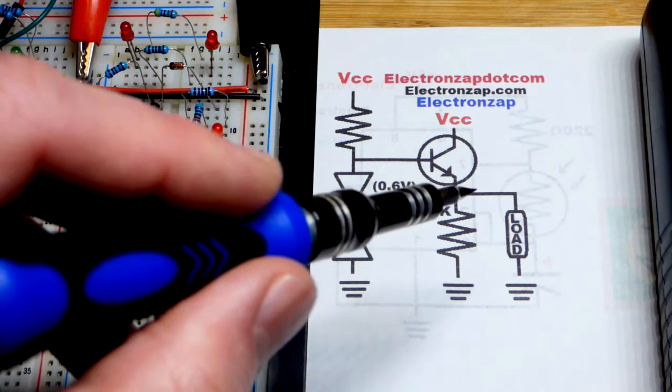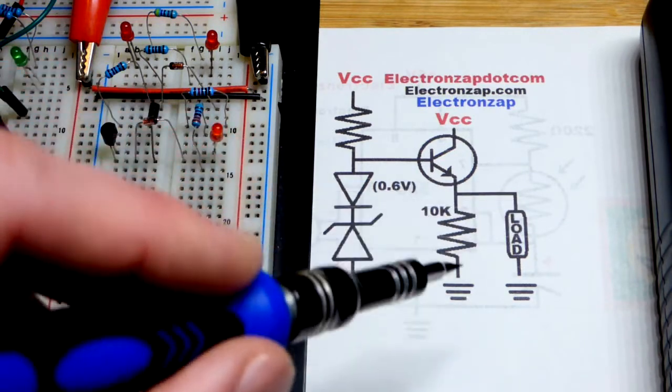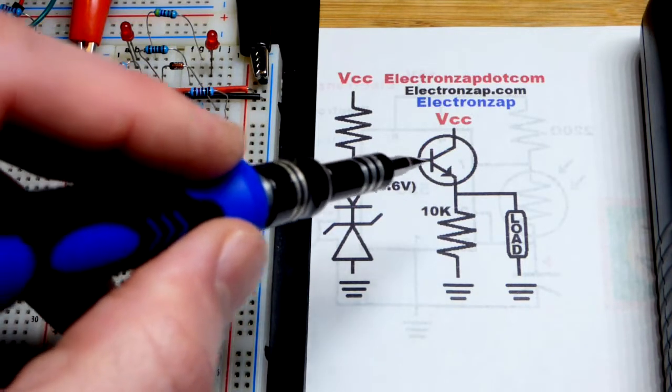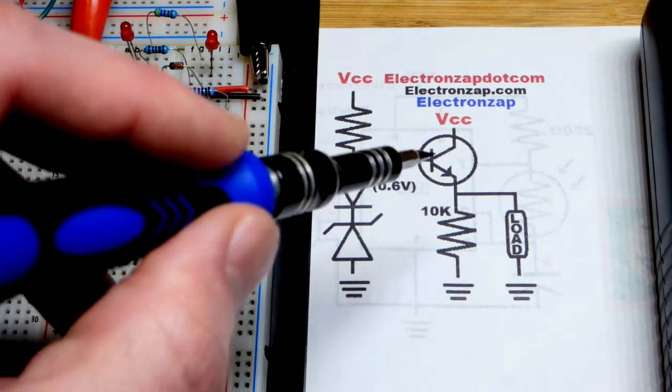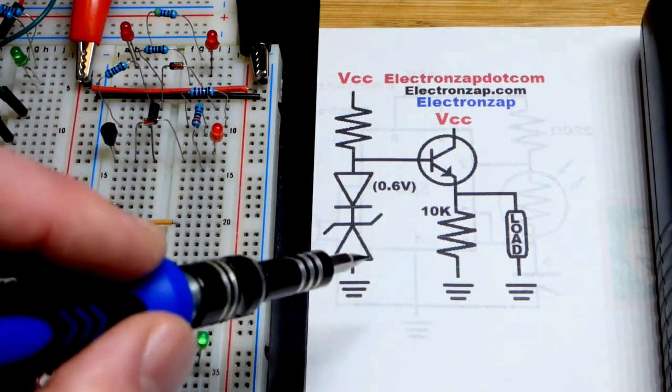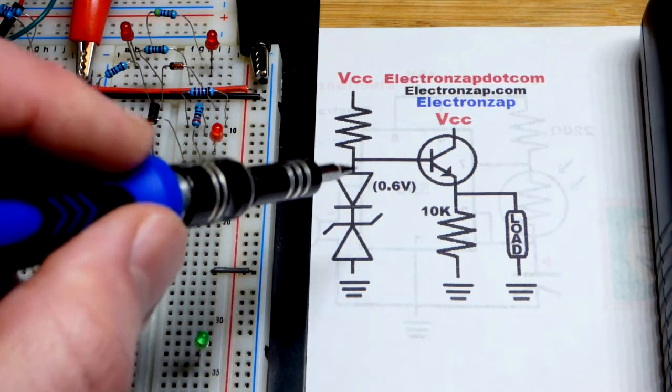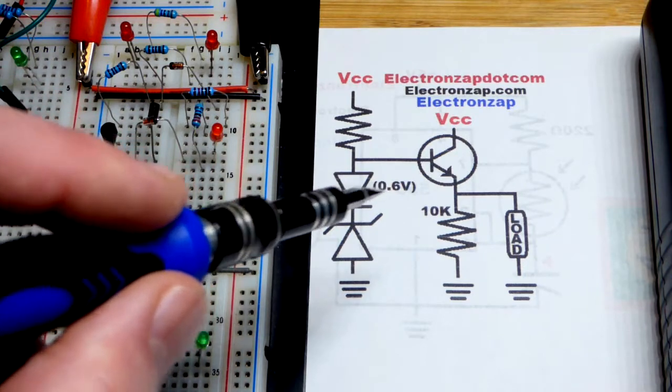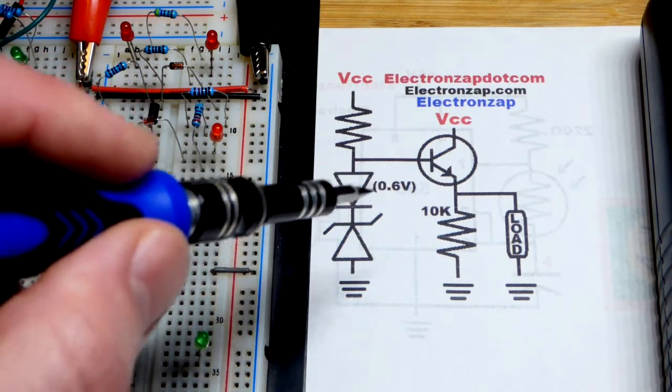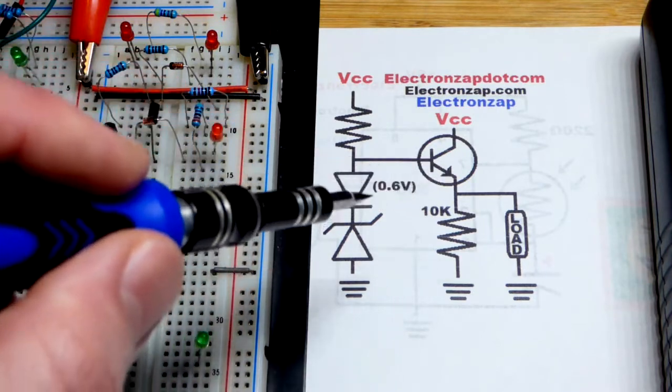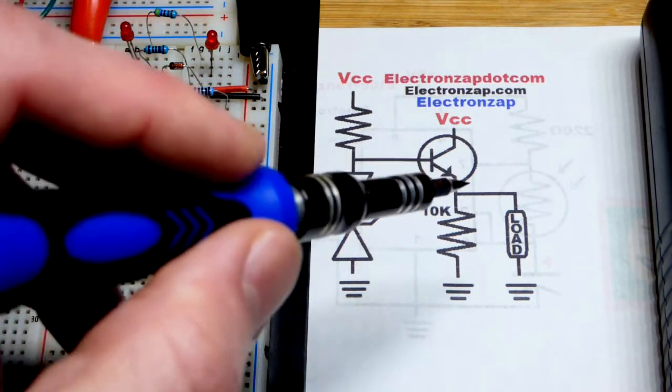This will set the voltage across the load and this resistor that helps it set the voltage, but it'll be 0.6 volts less than what we set there. So we can actually raise the zener voltage. This diode here is optional, but it will add, since it's forward biased, about 0.6 volts, the same voltage that you lose there. So it adds the voltage there, it drops it back down.